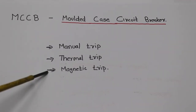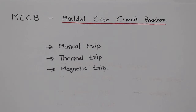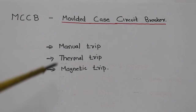The second trip is the magnetic trip. The magnetic trip is for short circuit protection. We have a short circuit protection in the MCCB via the magnetic trip.